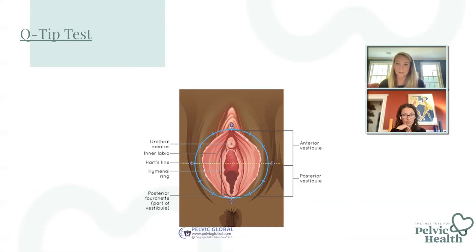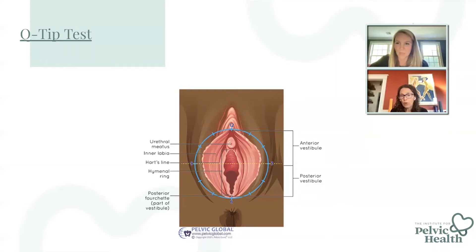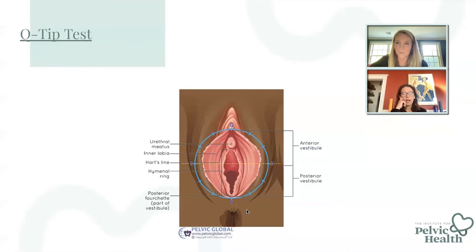This is a great assessment tool because it will tell you a lot. What if the tenderness is in the anterior vestibule — what does that signify? If it's in the anterior vestibule, we're thinking more neuro-proliferative, maybe congenital — not quite sure. But the big thing is that we're not thinking pelvic floor hypertonicity as much, so it's most likely not a pelvic floor muscle underlying etiology.